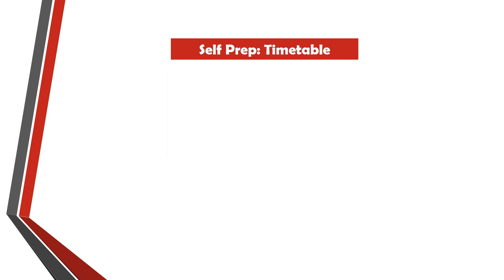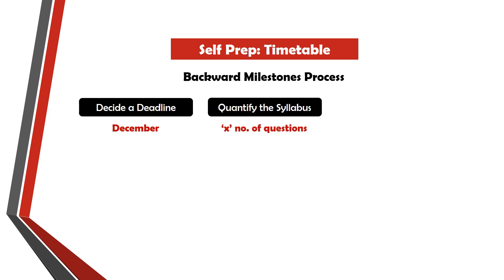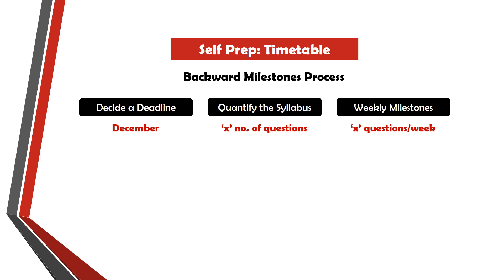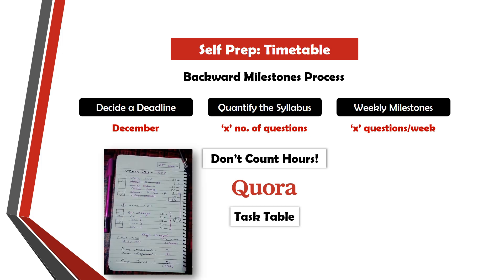The next thing is the timetable. In order to decide how much I need to do every day, I used a backward milestone process. I started in June and the first thing I did was set a deadline, which was December of that year. I decided I would finish the LOD one questions, so I quantified the questions — I noted down the number of questions in each chapter, then divided the total by the number of weeks I had left to determine how many questions I needed to finish each week. A lot of people ask how many hours you need to crack CAT — that's the wrong question. Determine how much syllabus you need to finish each week. I've written a detailed answer about this on Quora using a task table technique, and I'll share its link in the description.